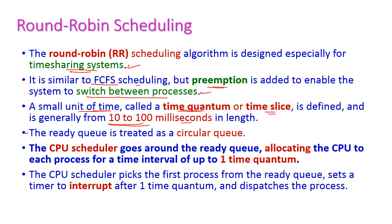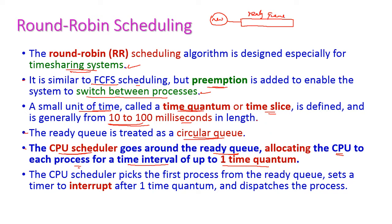The ready queue is treated as a circular queue, and the CPU scheduler goes around the ready queue, allocating the CPU to each process for a time interval of up to one time quantum. Once a new process is created, it will be placed in the ready queue. The time quantum is defined, and for that time quantum only, the processor will allow the process to execute in the CPU.